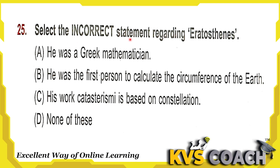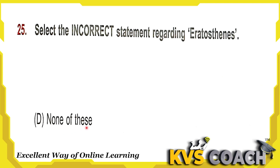Question 25: select the incorrect statement regarding Eratosthenes. Option A — he was a Greek mathematician — correct. Option B — he was the first person to calculate the circumference of the earth — yes, correct. Option C — his work Katasterismoi is based on constellations — also correct. So all statements are correct, meaning none of these is incorrect. Option D is the right answer.